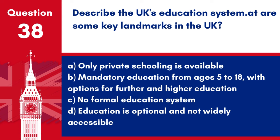Question 38. Describe the UK's education system. A. Only private schooling is available. B. Mandatory education from ages 5 to 18 with options for further and higher education. C. No formal education system. D. Education is optional and not widely accessible. Answer: B. Mandatory education from ages 5 to 18 with options for further and higher education. The UK's education system requires mandatory education for children from ages 5 to 18, with further and higher education options available.